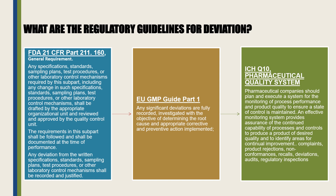The next guideline is the EU Good Manufacturing Practices guide Part 1, which states that any significant deviations are fully recorded and investigated with the objective of determining the root cause, and appropriate corrective and preventive actions should be implemented. Next is ICH Q10, the Pharmaceutical Quality System, which says pharmaceutical companies should plan and execute a system for monitoring process performance and product quality to ensure a state of control is maintained. An effective monitoring system provides assurance of continued capability of processes to produce a product of desired quality and identifies areas for continual improvement, including complaints, product rejections, non-conformities, recalls, deviations, audits, and regulatory inspections.